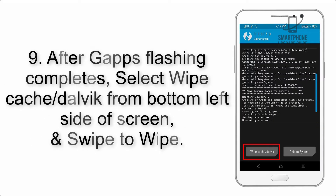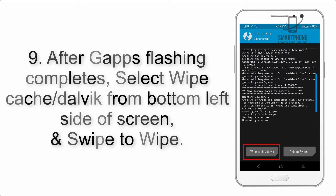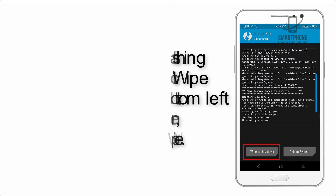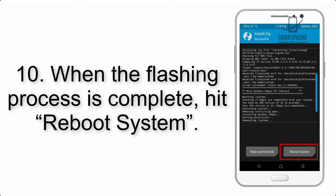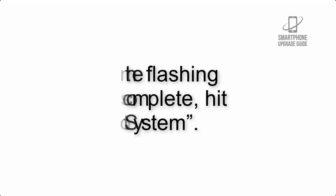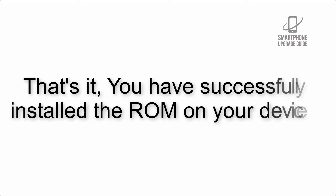Step 9: After GApps flashing completes, select Wipe Cache and Dalvik from the bottom left side of the screen and swipe to wipe. Step 10: When the flashing process is complete, hit Reboot System. That's it — you have successfully installed the ROM on your device.